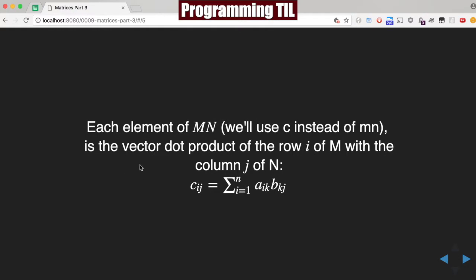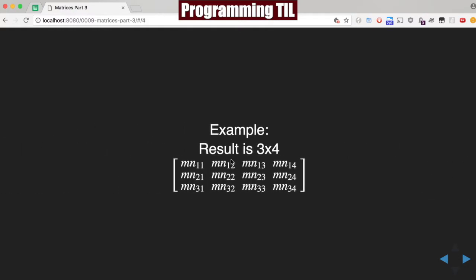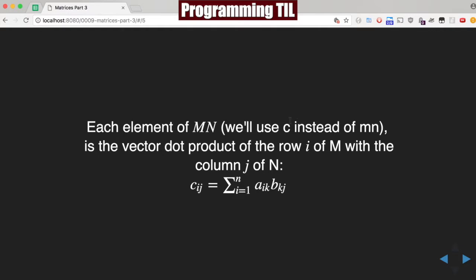So every element within this is going to be equal to, we're going to put in C instead of MN, is equal to the vector dot product of the row I of M with the column J of N. So what does this look like in practice?